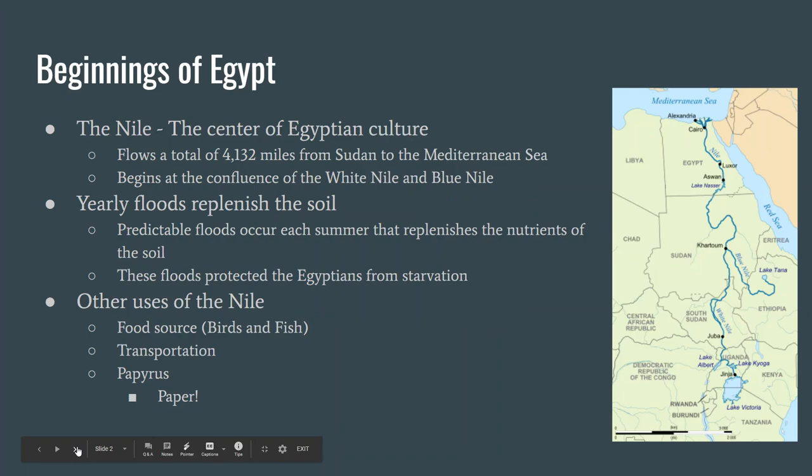The first thing you have to know about ancient Egyptian culture is the Nile River — it's kind of the lifeblood of the people. I've got a map here on the right-hand side to show you what it looks like. It's really long, over 4,000 miles. It flows from the south, starting near Lake Victoria, then flows north as the White Nile. Near the city of Khartoum, Sudan, it joins with the Blue Nile and flows through the desert until it reaches the Mediterranean Sea.